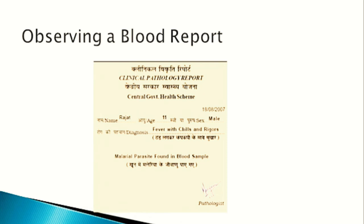Let us take this example — a blood report sample. You must have seen it in your EVS textbook of class 5 in the chapter titled 'A Treat for Mosquitoes,' on page number 69. You can ask children to observe that blood report and answer questions like: When was this test done? Whose test is it? How old is the child? How do you know it is a blood test report? And what is the finding? So observations are not always outside the classroom — they are also inside the classroom, with various examples in the EVS textbooks.